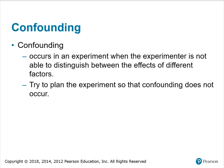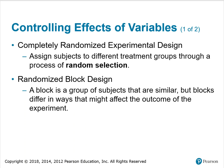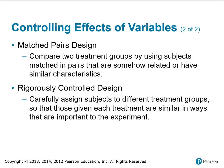Confounding occurs in an experiment when the experimenter is not able to distinguish between the effects of different factors. Try to plan the experiment so that confounding does not occur. Completely randomized experimental designs assign subjects to different treatment groups through a process of random selection. Randomized block design is when a block is a group of subjects that are similar, but blocks differ in ways that might affect the outcome of the experiment. Matched pairs design compares two treatment groups by using subjects matched in pairs that are somehow related or have similar characteristics. Rigorously controlled designs carefully assign subjects to different treatment groups so that those given each treatment are similar in ways that are important to the experiment.